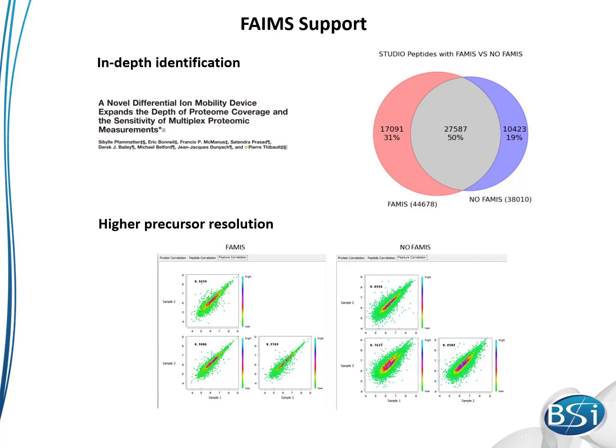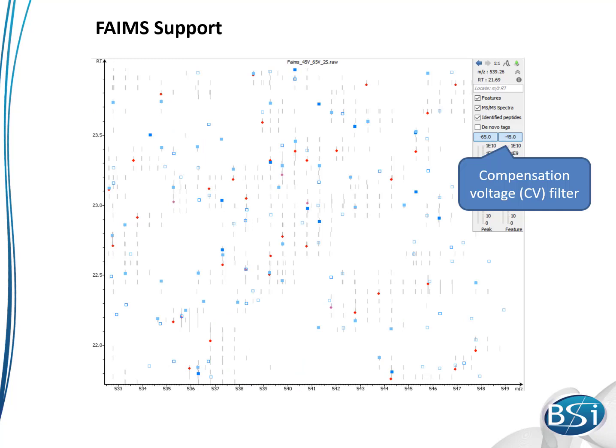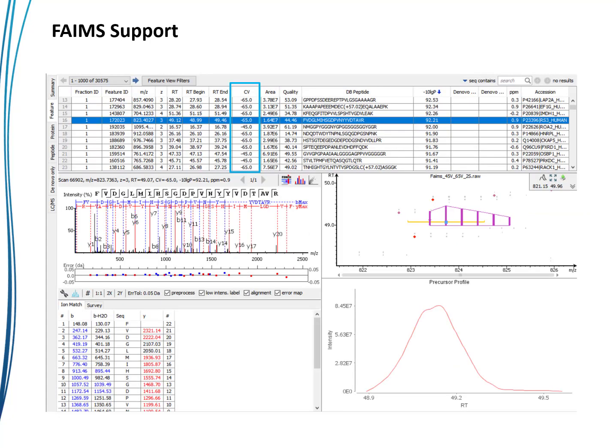FAMES data in Peaks can be visualized intuitively. In the data view, CV buttons are provided to visualize the scans coming from different CVs. The different CVs can then be distinguished based on their color. Also, in your Peaks results, the CV value is given in a separate column, allowing you to compare the identifications made by the compensation voltages used.